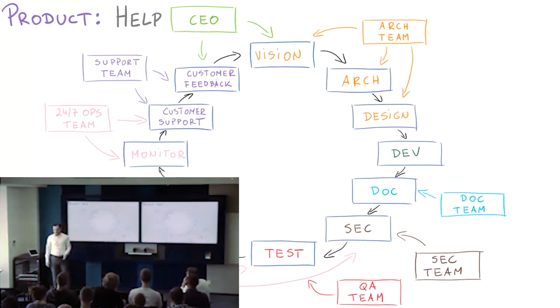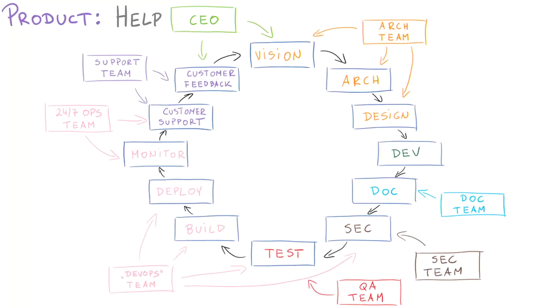The same with security. You need to make your product secure. You cannot outsource that. Other teams can help you, provide you with guidance. QA team, the same. We go to the DevOps team.